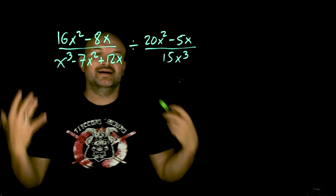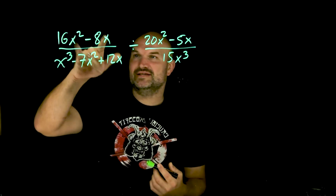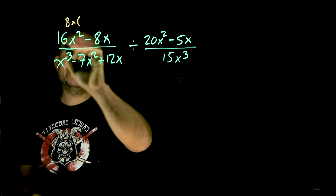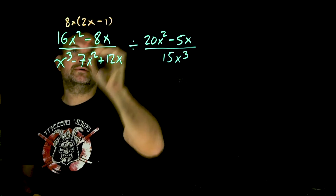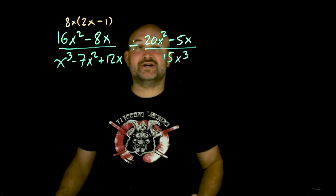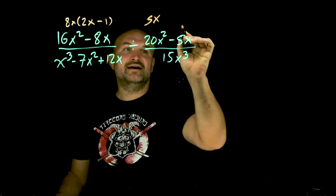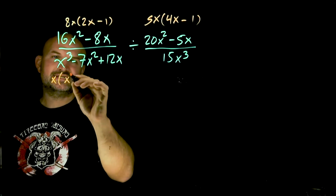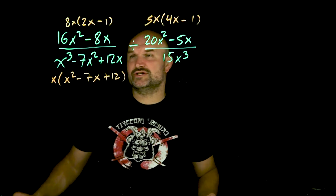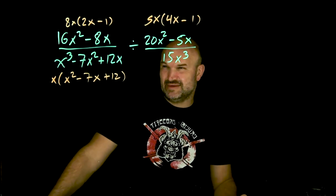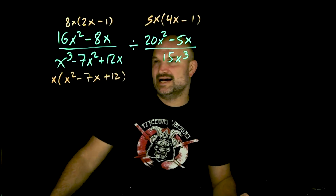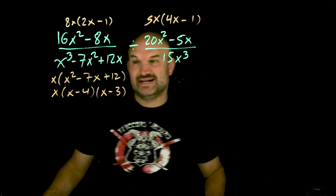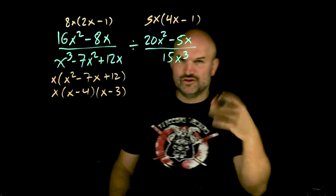Starting with the factoring: I factor out 8x from the numerator, leaving (2x minus 1). Over here I factor out 5x, leaving (4x minus 1). For the next expression I factor out an x, giving x(x squared minus 7x plus 12). Two numbers that multiply to 12 and add to negative 7 are negative 4 and negative 3, so that factors further to x times (x minus 4) times (x minus 3). The last term, 15x cubed, stays as is.